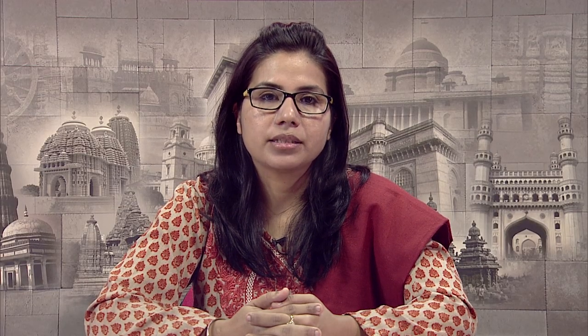Let's start with the first objective — about Vedic text. What is Veda? The word Veda is derived from the root 'vid' which means 'to know.' The word Veda means the sacred knowledge contained in the text known as Vedic text. Two categories of texts are included in the corpus of Vedic literature: these are Mantra and Brahmana.